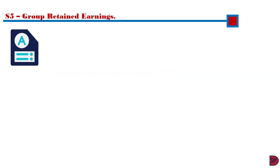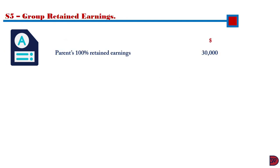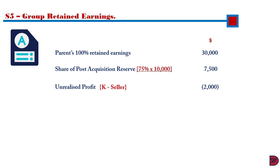The final step is group retained earnings. We bring the parent's retained earnings of $30,000, add its entitlement in the post-acquisition reserve of Zira — 75% of $10,000 — then deduct the unrealized profits relating to the non-current asset sold of $2,000. The total group retained earnings on consolidation is $35,500.